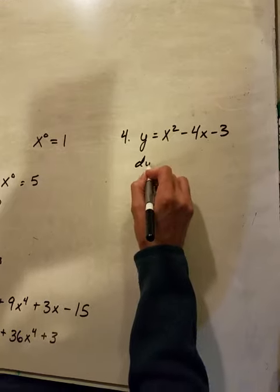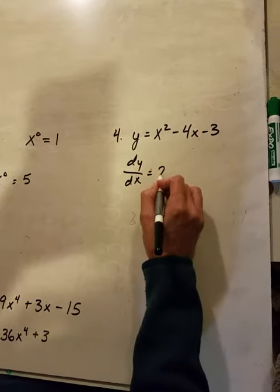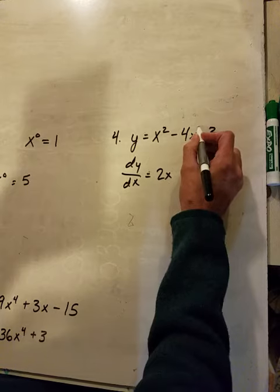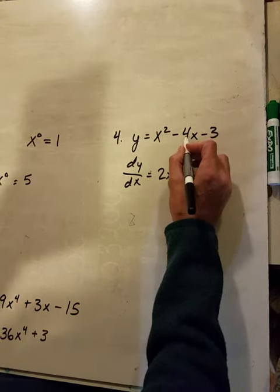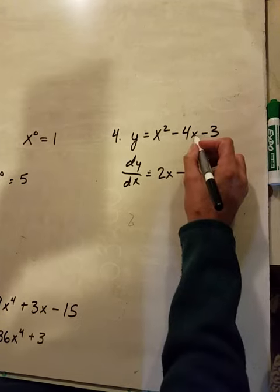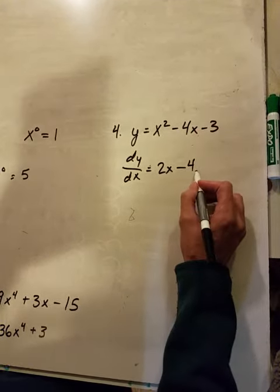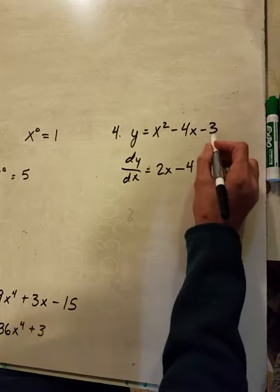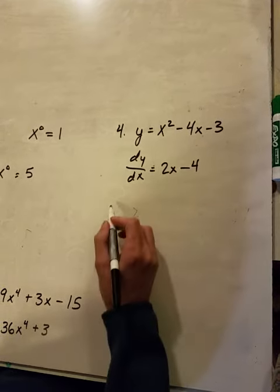dy dx. It's going to be 2x. This is a 1, so this is going to be negative 4 times 1, is negative 4, and x to the 1 minus the power is x to the 0, so that just becomes 1. And then 3 just goes away, so that's all we've got.